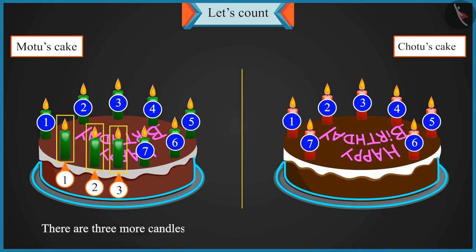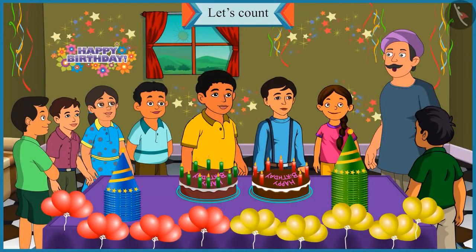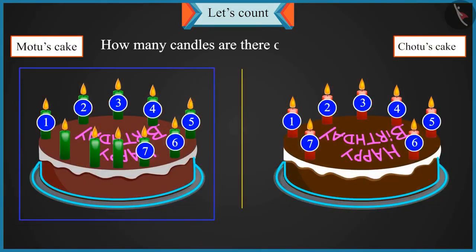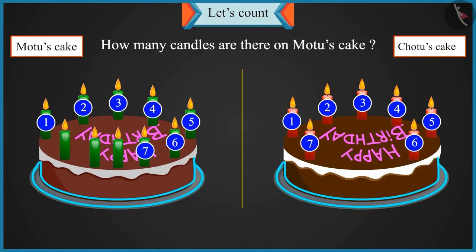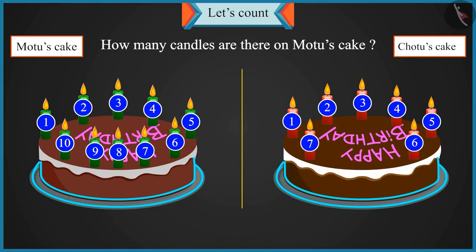And there are three more candles. So there are three more candles on Motu's cake. Chotu, there are a total of seven candles on your cake. How many candles are there on Motu's cake? After seven, there are eight, nine and ten. So there are a total of ten candles on Motu's cake.